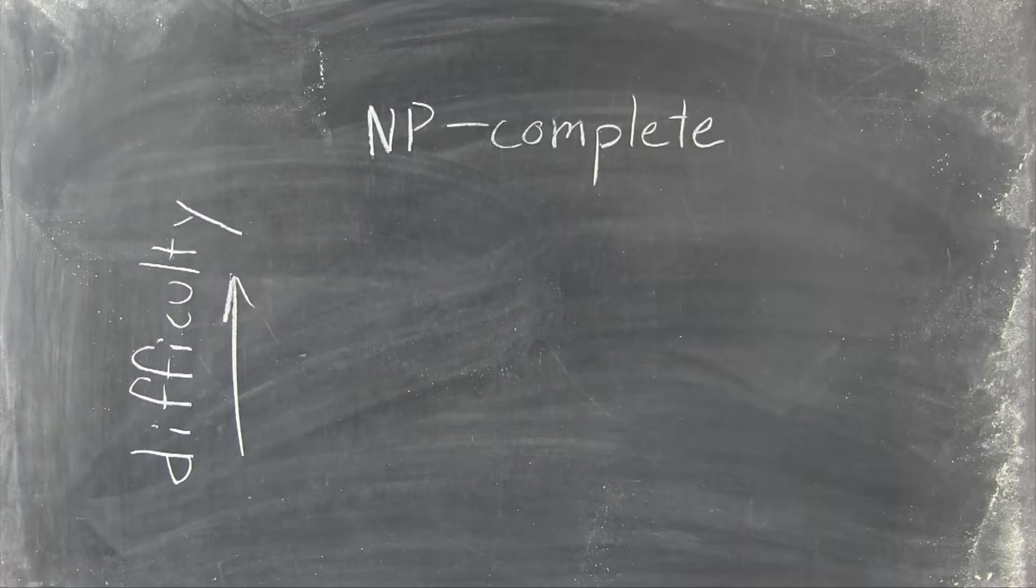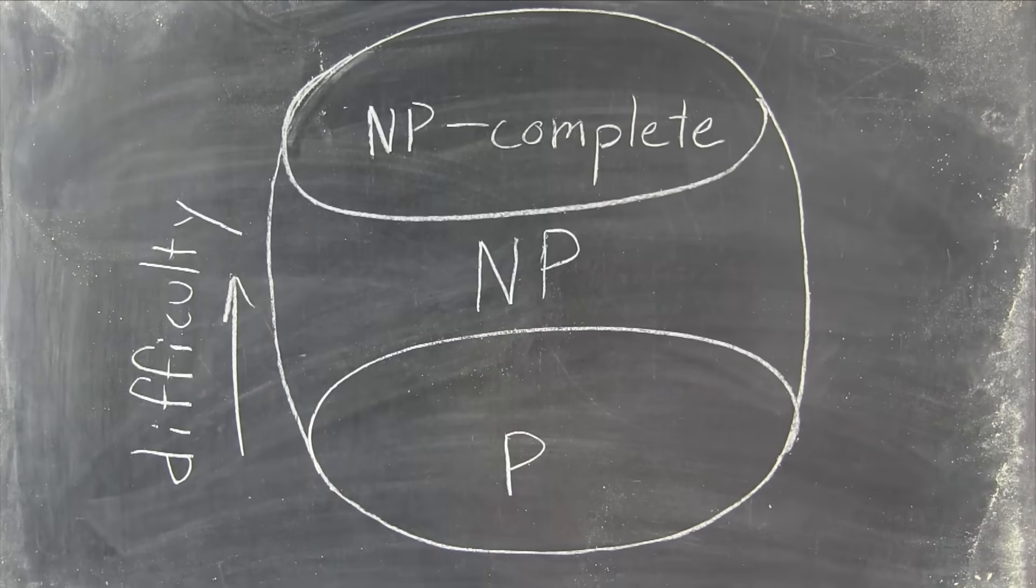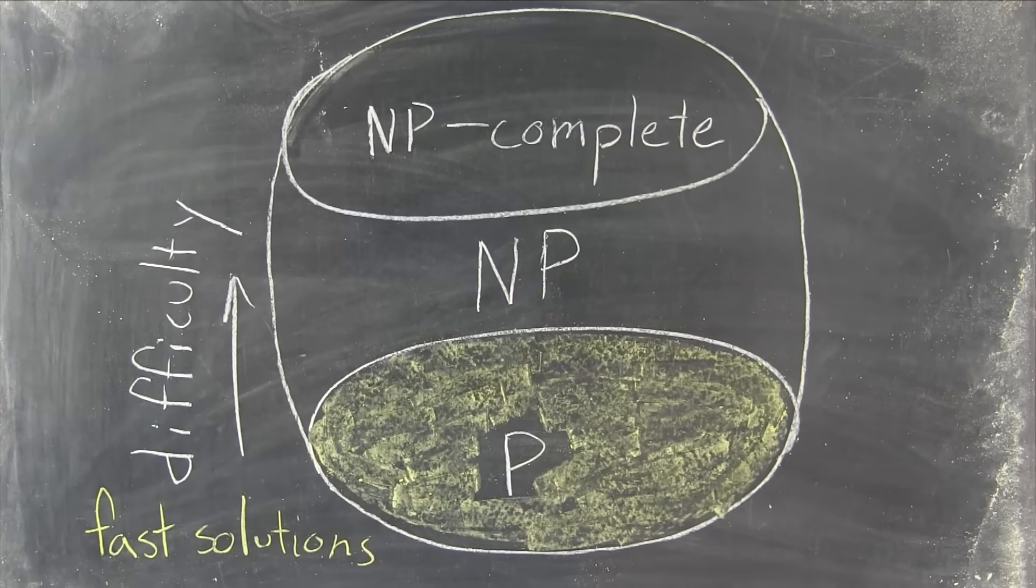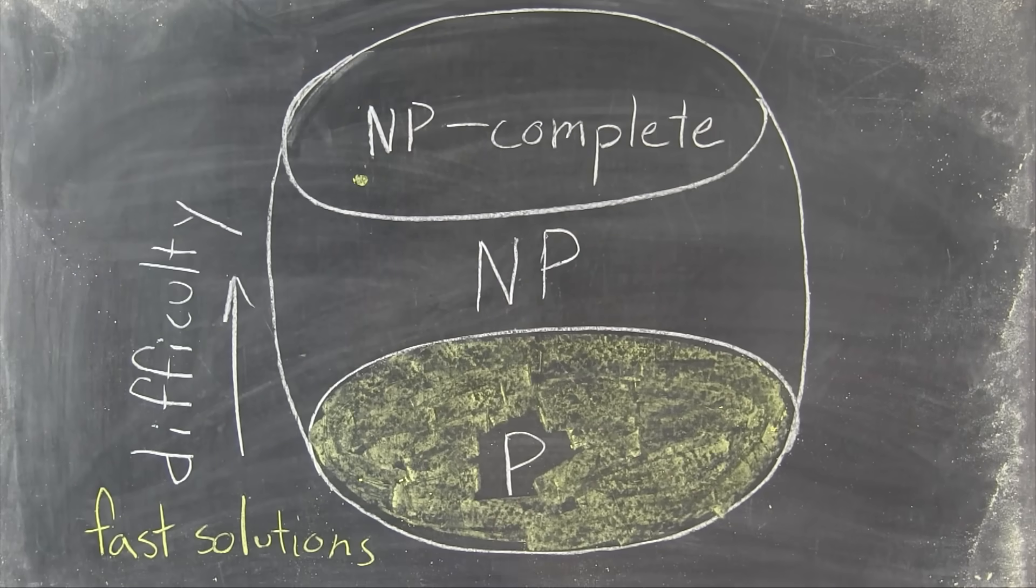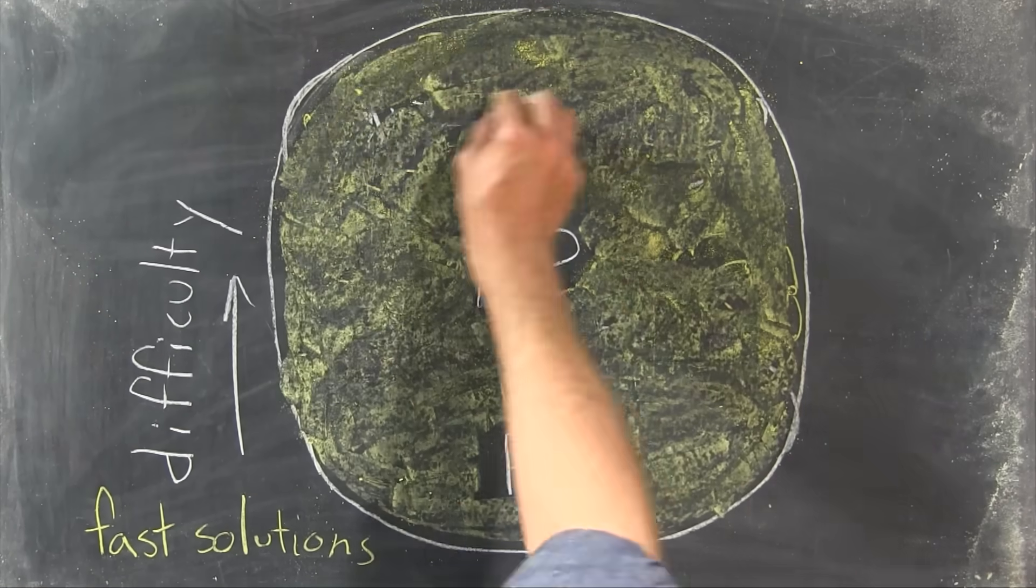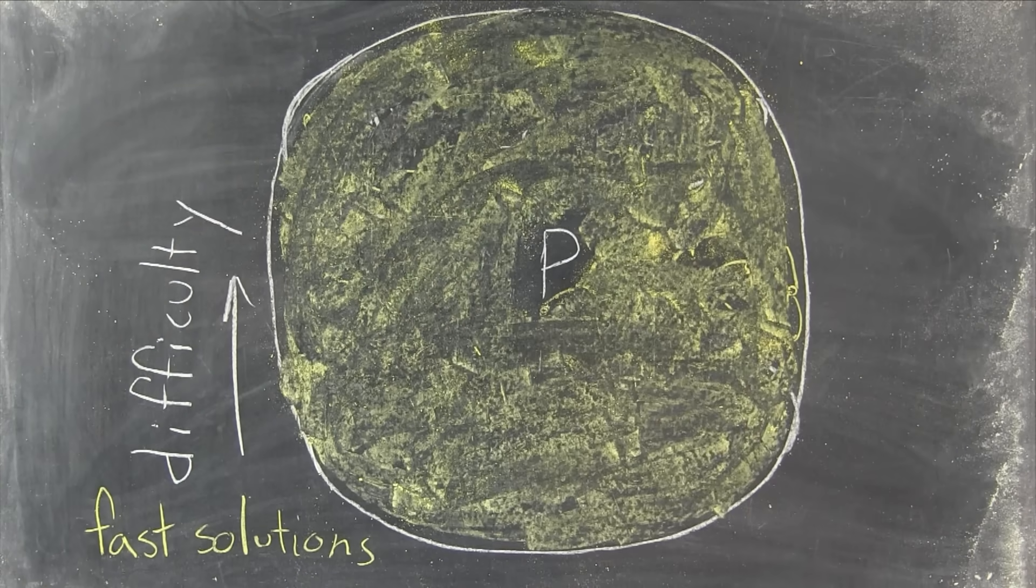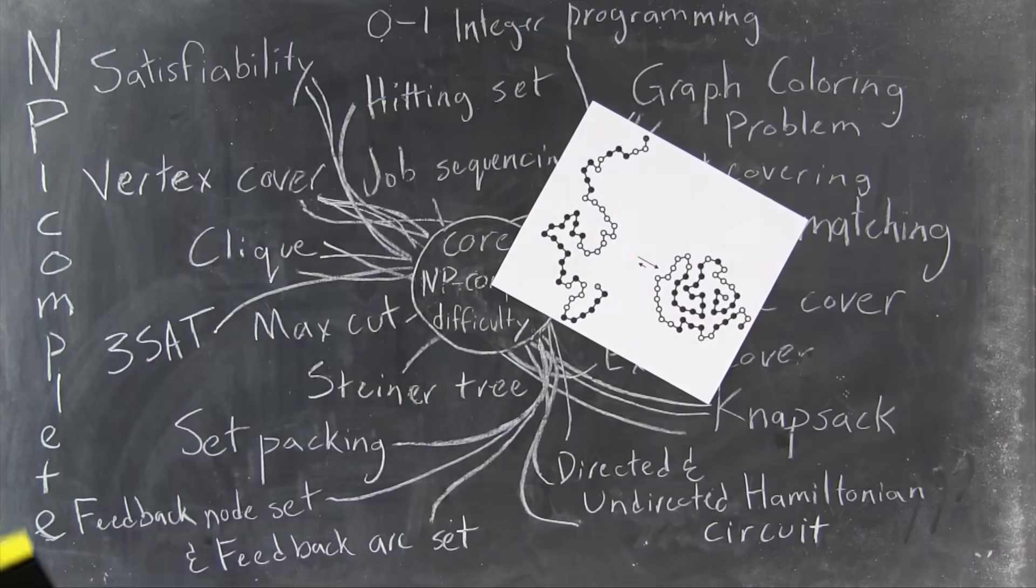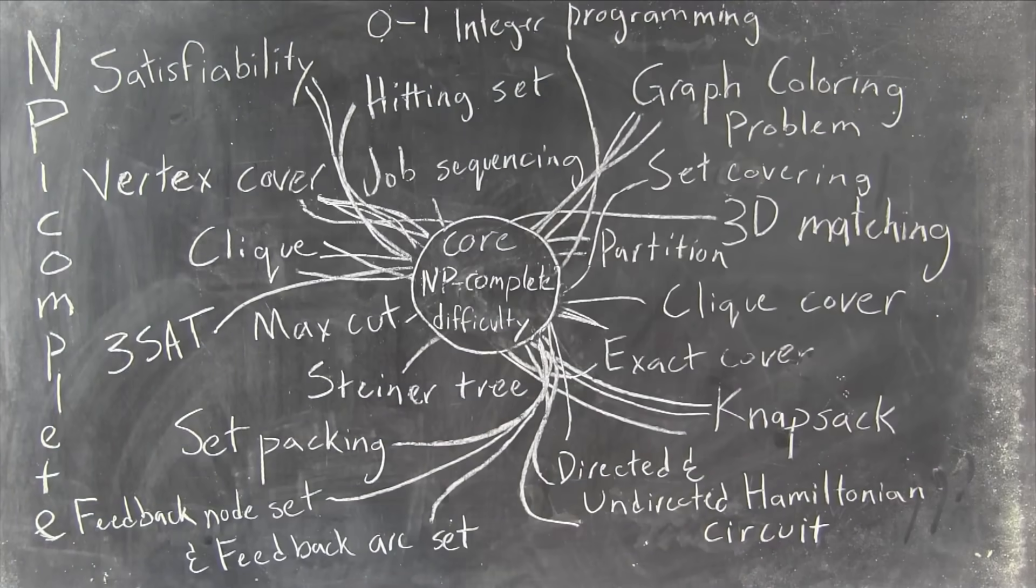NP-complete is yet another math phrase, meaning that these problems include all the really hard parts of every NP problem. A fast program for solving any NP-complete problem could be used to solve every problem in NP. The whole class would instantly collapse. So yeah, amazingly, Sudoku is hard because it involves literally the same NP-complete task that makes protein folding hard.